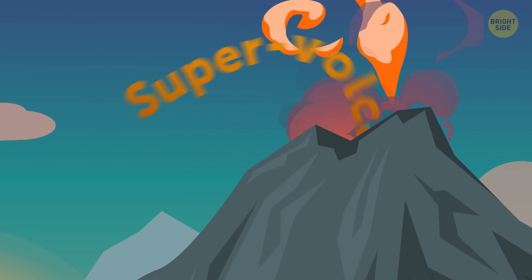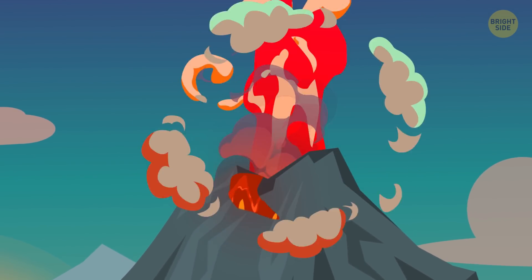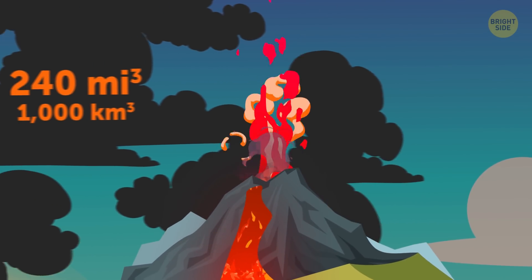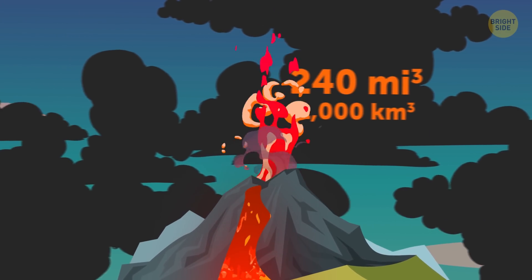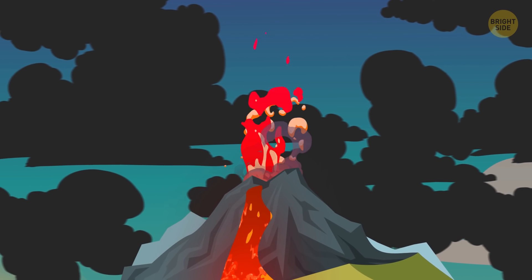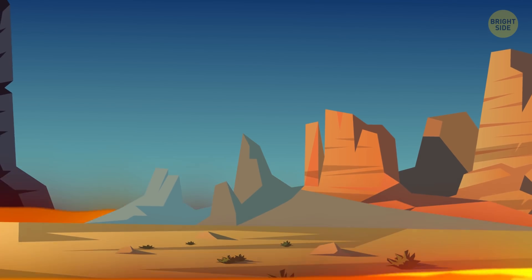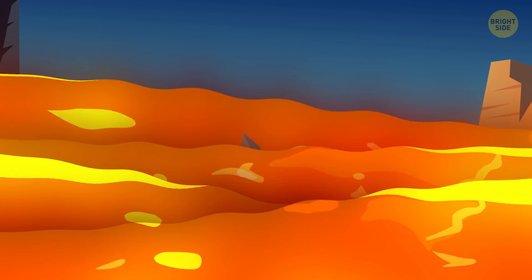But before I tell you about all this drilling, let me introduce you to supervolcanoes that can produce supereruptions. And when they do, they blow more than 240 cubic miles of ash, molten rock, and hot gases up in the air. In other words, 4 supereruptions could fill the Grand Canyon to the brim.